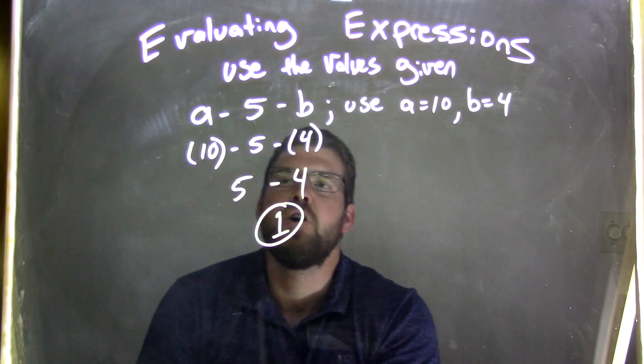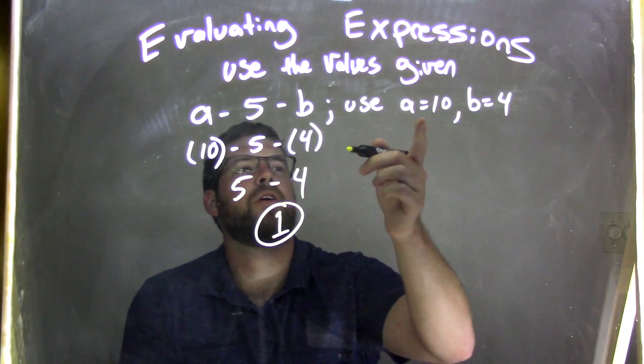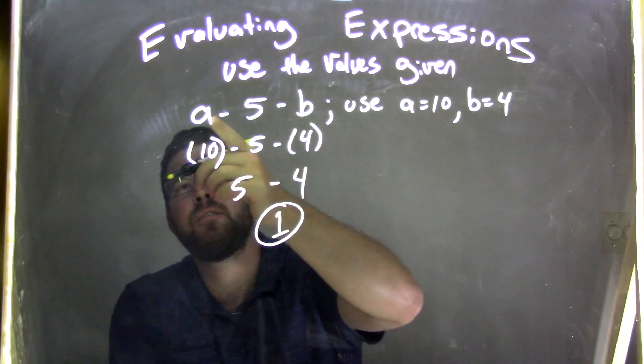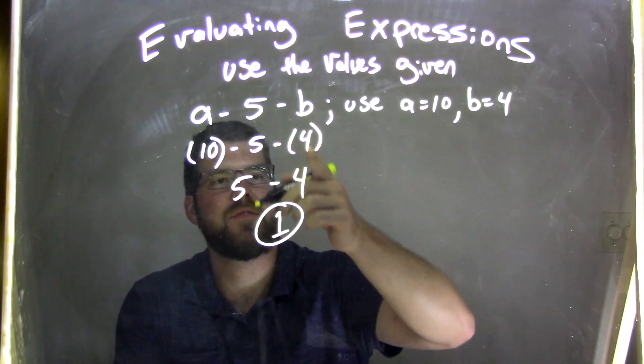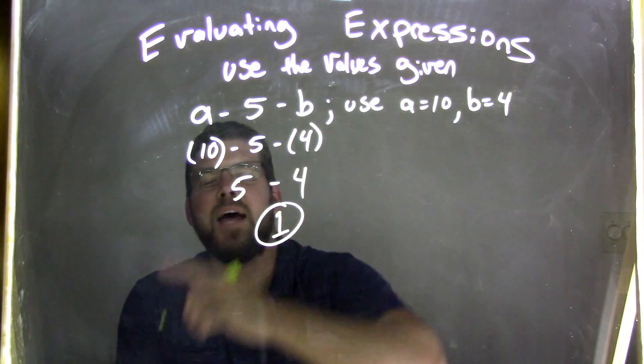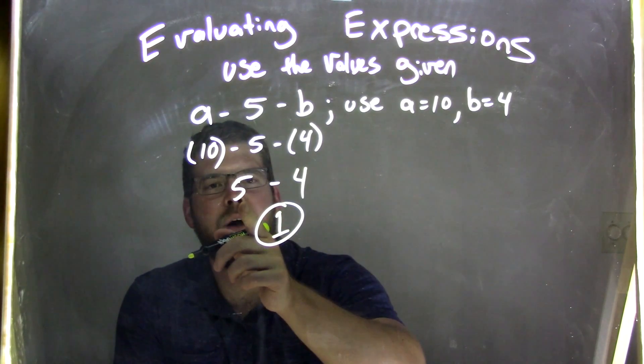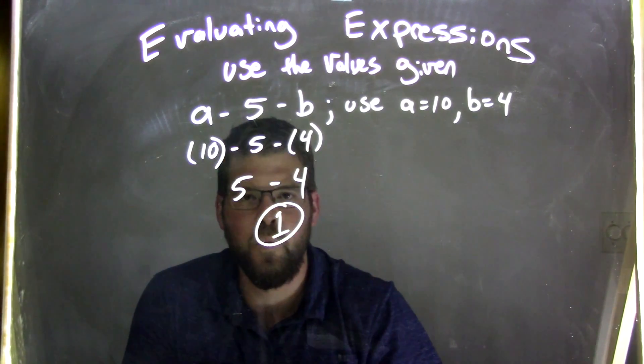And there, we're done. So again, recap. We took our A equals 10, we substitute that in right here, and you get 10 in parentheses. B equals 4, substituted that in for that 4. Now we simplify. 10 minus 5 is 5, and 5 minus 4, bringing that down, is 1.